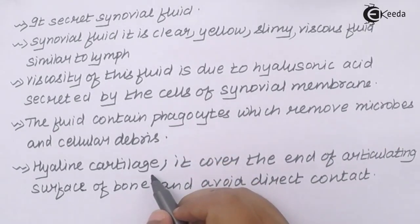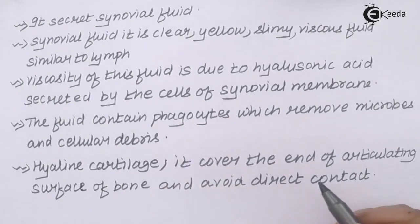Hyaline cartilage is a part of synovial joint. It covers the end of articulating surfaces of your bones and avoids direct contact between them, or you can say it avoids friction between them.